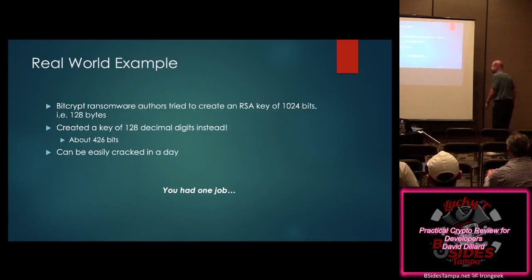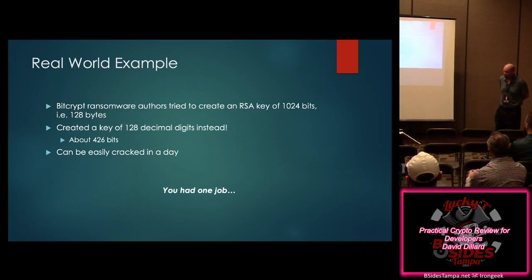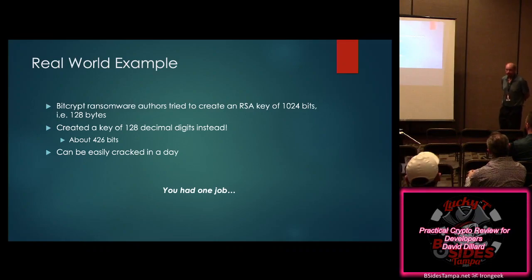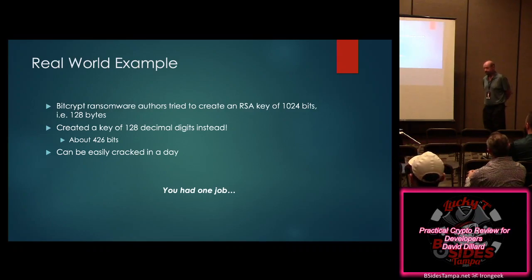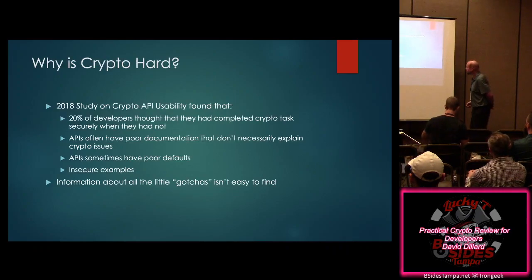Here's a real-world example. There was a presentation in this room earlier on ransomware. One of the reasons that ransomware failed was bad crypto — they tried to create an RSA key but they just went dirty with it. What they did was create a key of 128 decimal digits. When you do the math on that, it's only about 42 bits of entropy. You can break that in a day. They had one job: get the crypto right so people can't decrypt it. And they screwed it up.